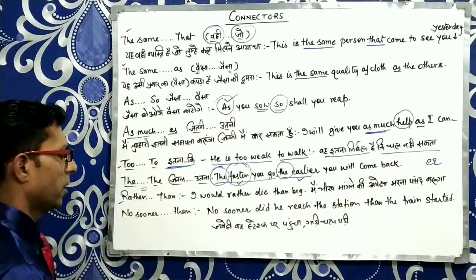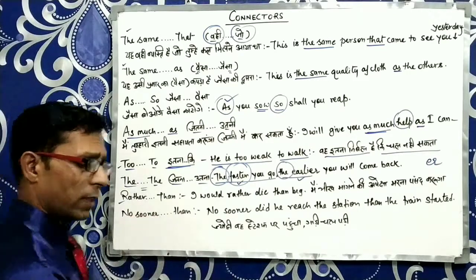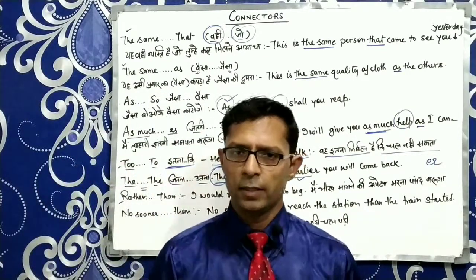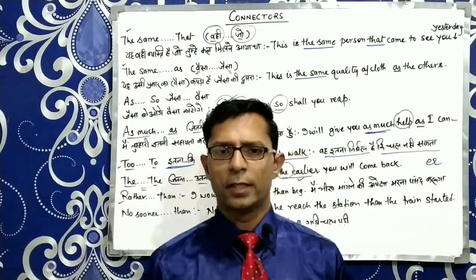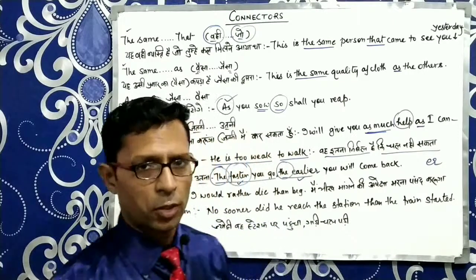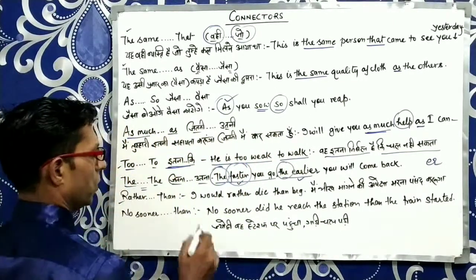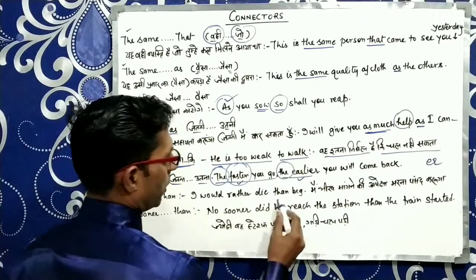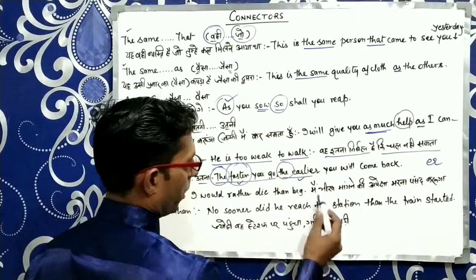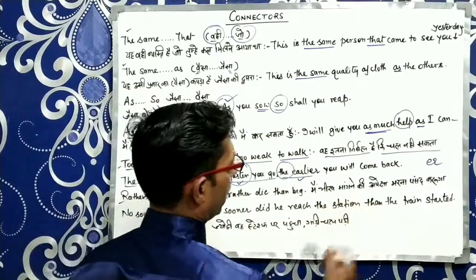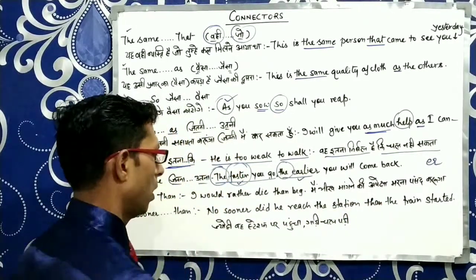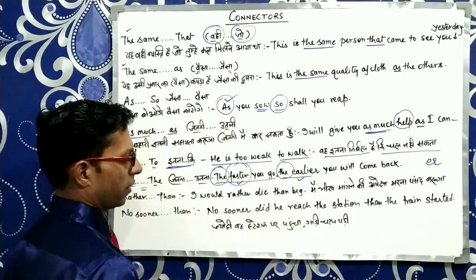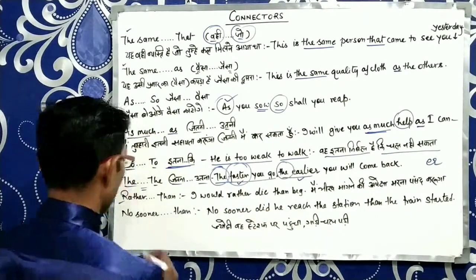اگلا connector ہے Rather Than — اس کا مطلب ہے کی اپیکشا یا بجائے. جب ہم دو چیزوں کا موازنہ کرتے ہیں تو Rather Than کا use کرتے ہیں. مثال: I would rather die than beg — میں بھیق مانگنے کی اپیکشا مرنا پسند کروں گا.